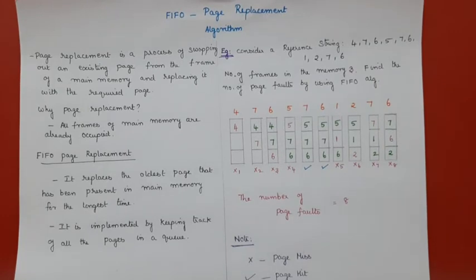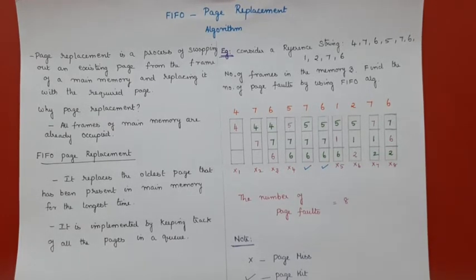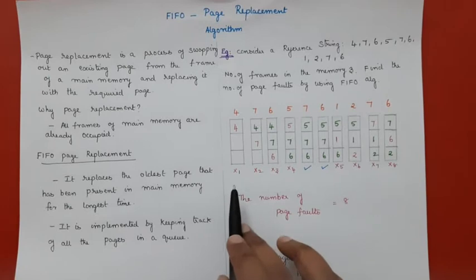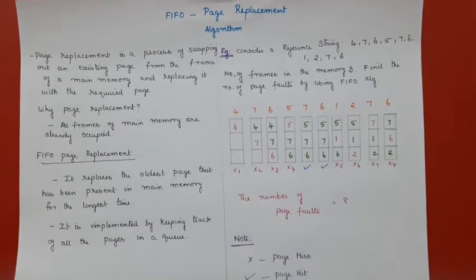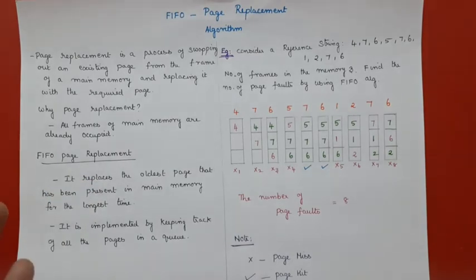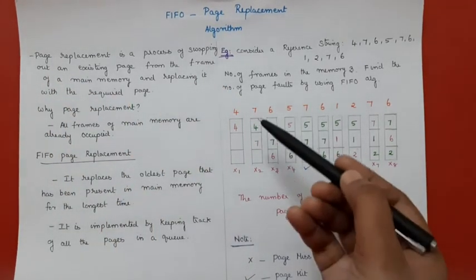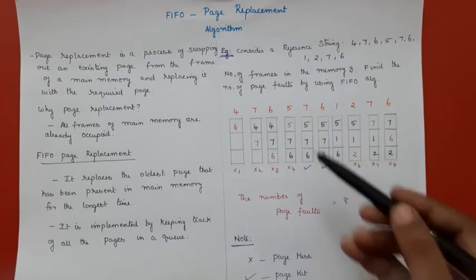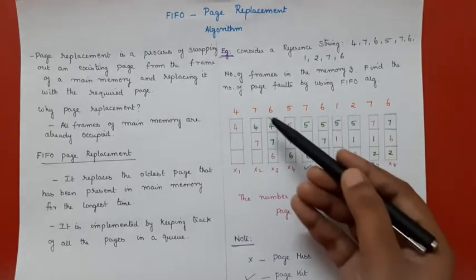The first page that comes in is 4. I check main memory — 4 is not there, so I put page 4 into the first frame. Since it was not already in main memory, this is a page fault. The next page is 7 — 7 is not there either, so I place it in a free frame. This is also a page fault.